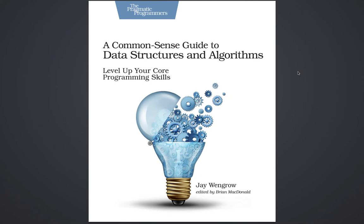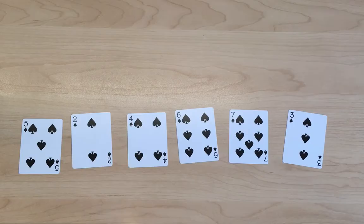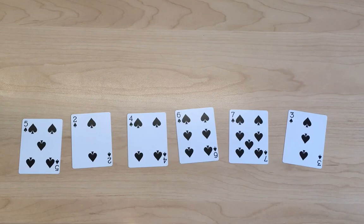So what exactly is an algorithm? Let's say we have these playing cards on the table, and I wanted to put them in the correct order: 2, 3, 4, 5, 6, 7. As a human, we can easily intuitively do this, but how do I tell a computer to do it? That literal set of instructions is called an algorithm.